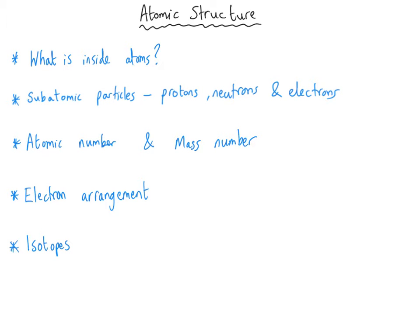Hello everybody and welcome to this GCSE chemistry video about atomic structure. In this video we will take a look at what is inside atoms and how those particles are arranged. We will look in more detail at the subatomic particles — protons, neutrons and electrons — and their properties. Then we'll look at the atomic number and mass number from the periodic table, how to use them, and how electrons are arranged in an atom. And last of all we will look at isotopes.